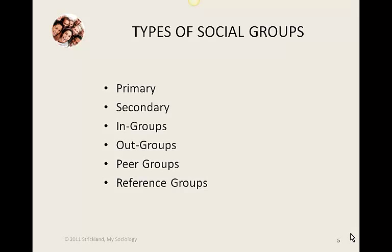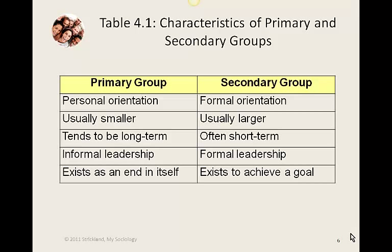A primary group is usually small and informal. If there's leadership, it's informal leadership — it's not a highly structured group, and it doesn't exist to meet a specific goal. It may simply exist for the sake of existing. In contrast, a secondary group is usually larger, has some kind of formal organization, and often has formal leadership — maybe even formal requirements for belonging. Secondary groups exist to meet a goal.